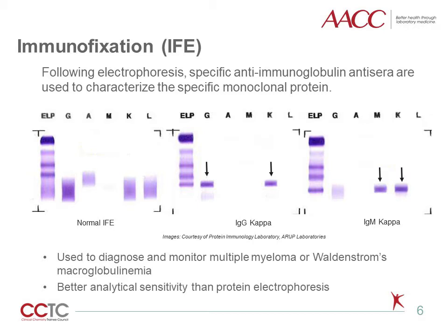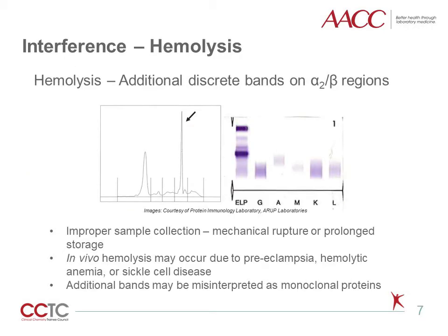IFE is also employed in cases where serum protein electrophoresis is unable to quantify small abnormalities, as it can happen with beta-migrating M-proteins or small free light chains. One of the most commonly encountered interferences in clinical laboratories is hemolysis, and electrophoresis can be affected by this interference.